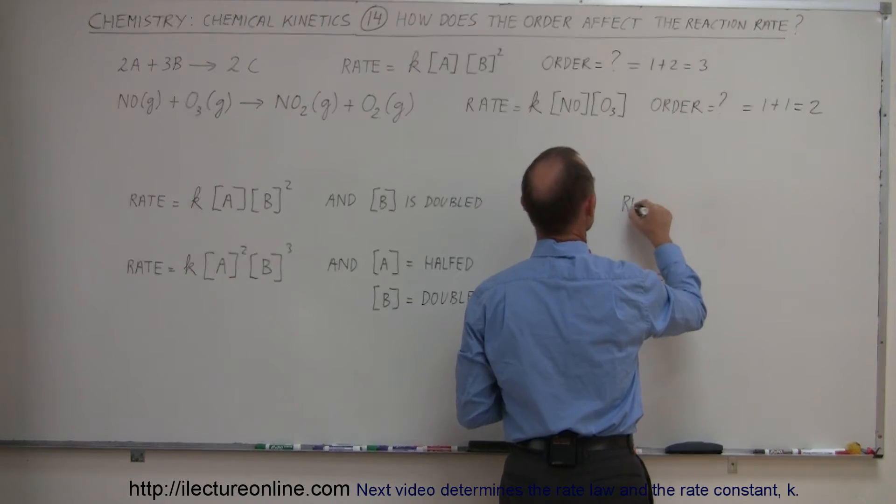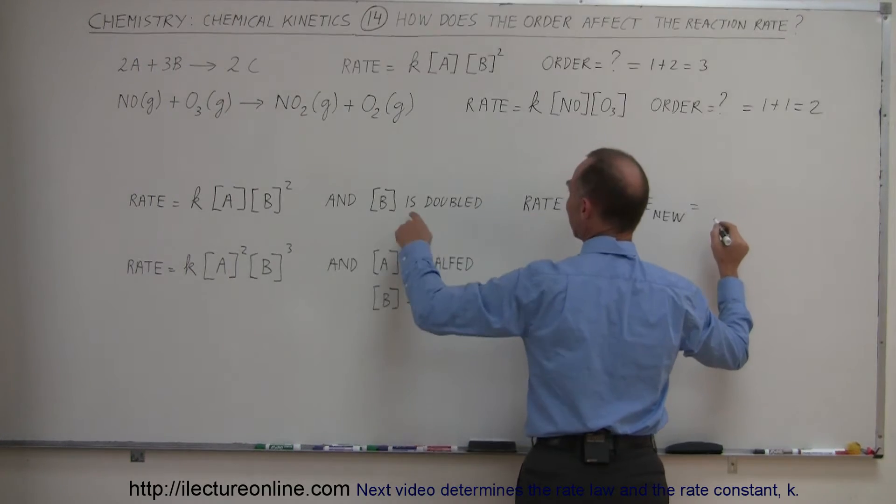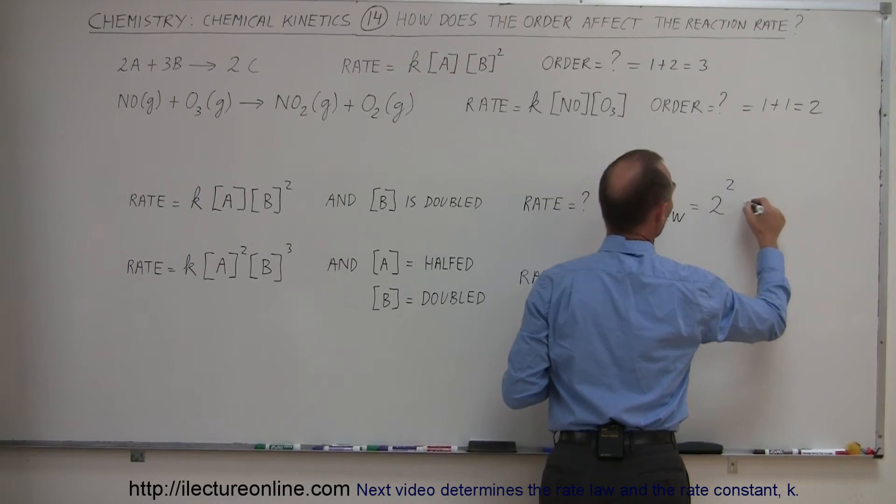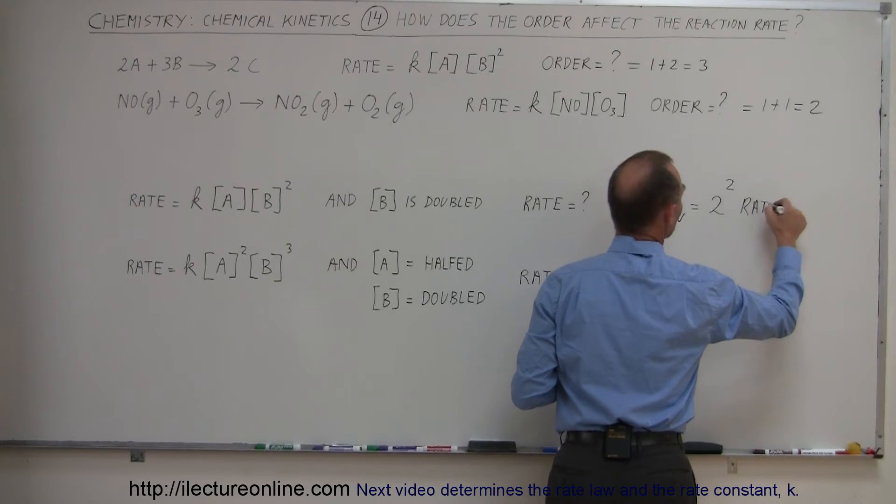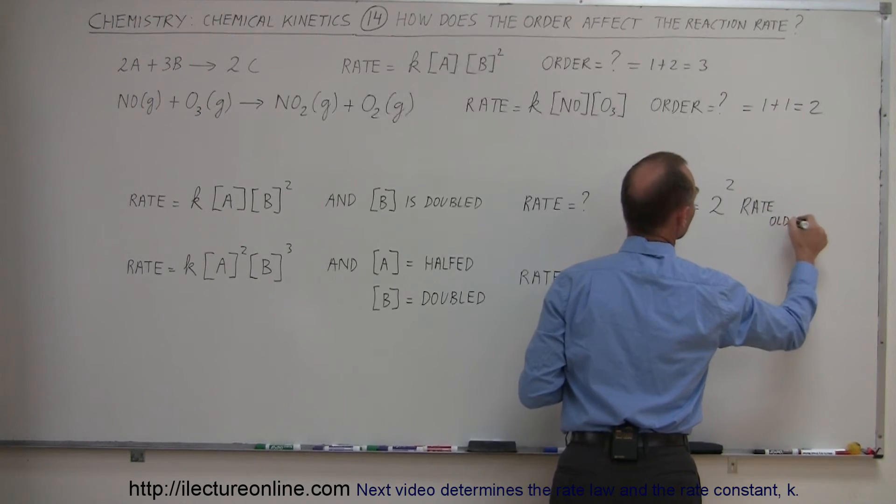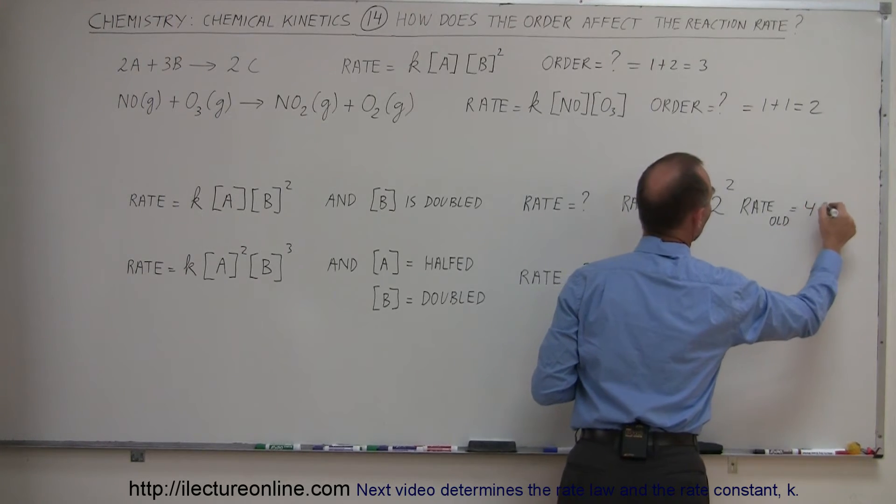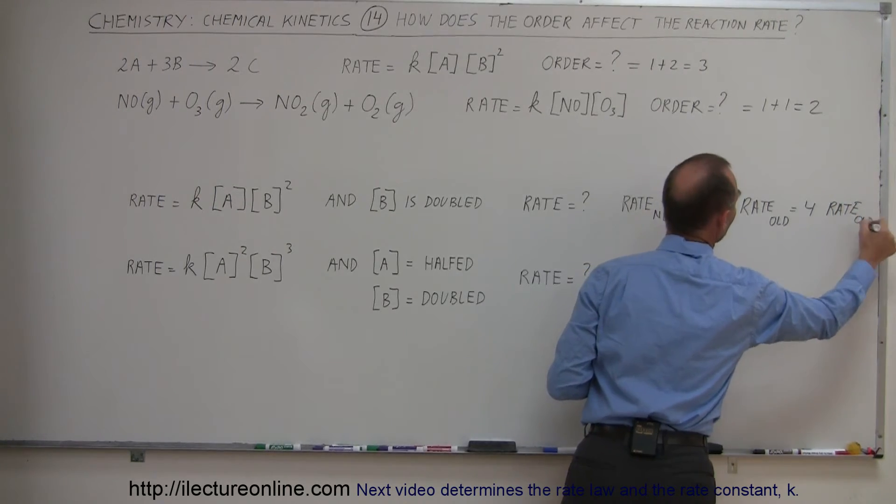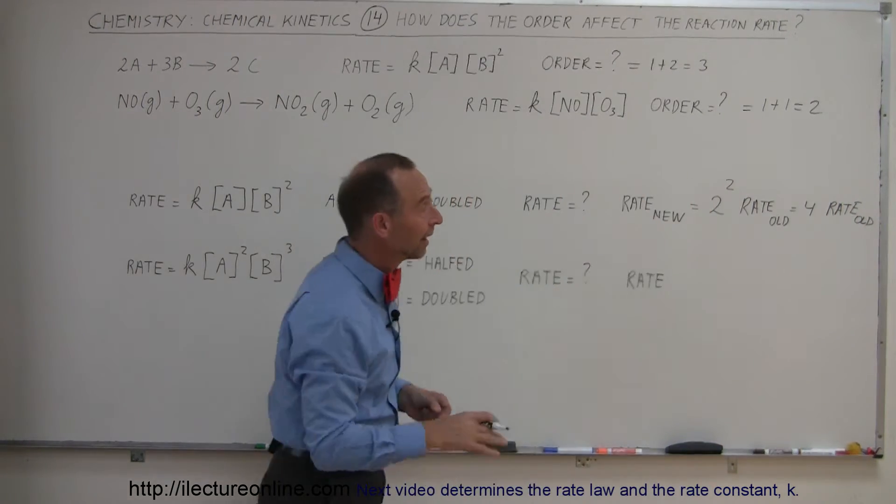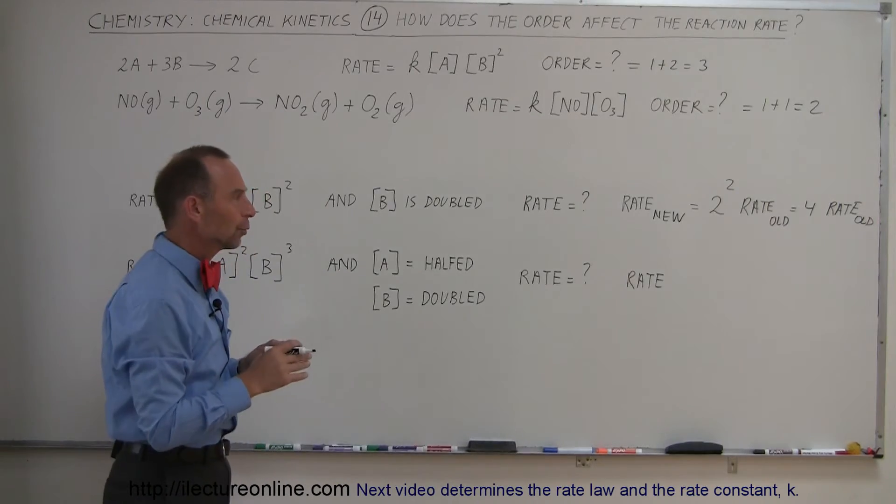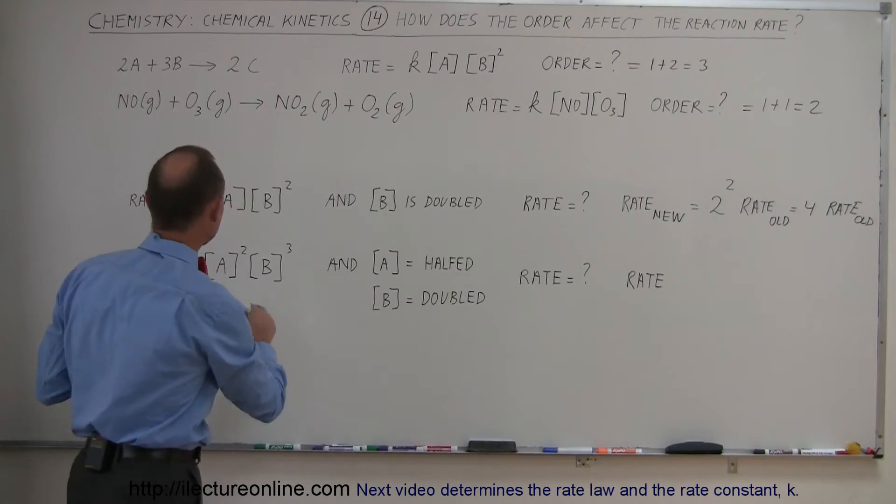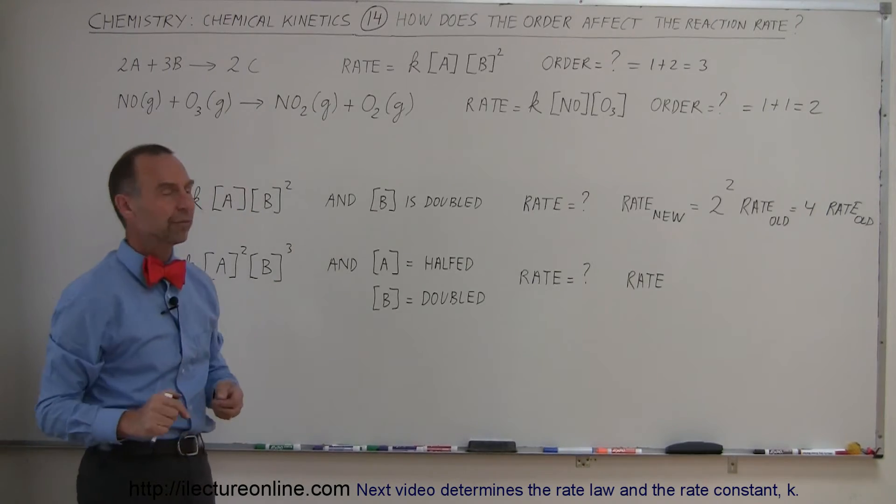So the rate new is equal to, again we did the doubling, so we take 2 raised to the second power times the old rate, that's what I should have said. So this is equal to 4 times the old rate, or rates of old if you want to write it like that. That's what I should have written, just to make it more clear. What we're doing here is that the new rate is simply 4 times the old rate, what it was before when we did double the concentration of B.